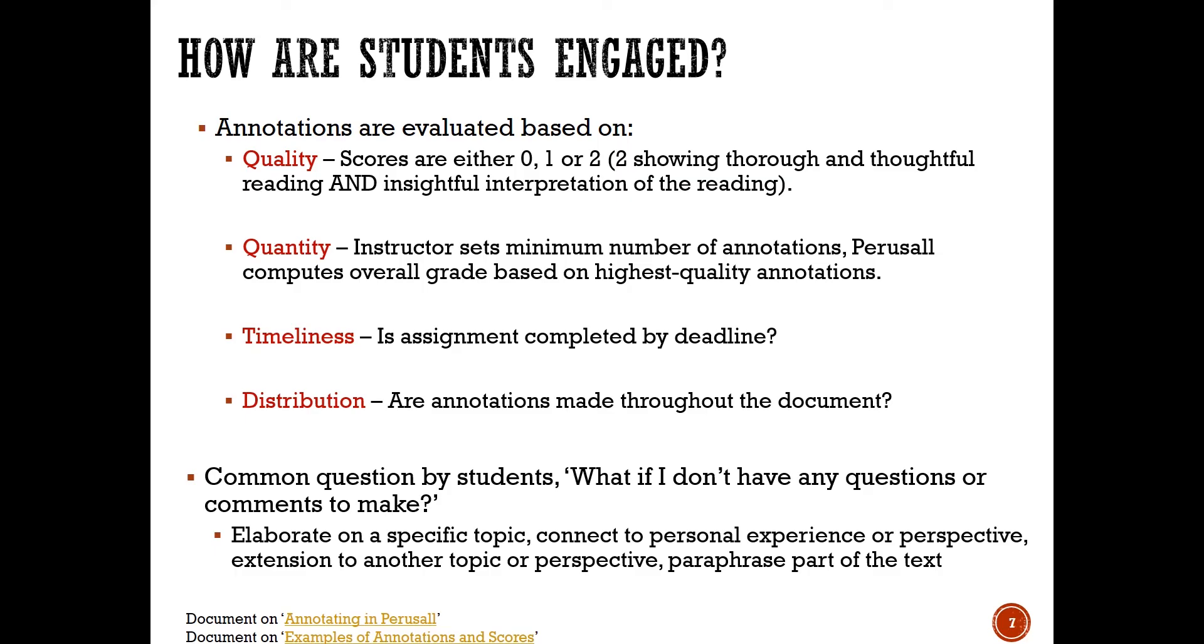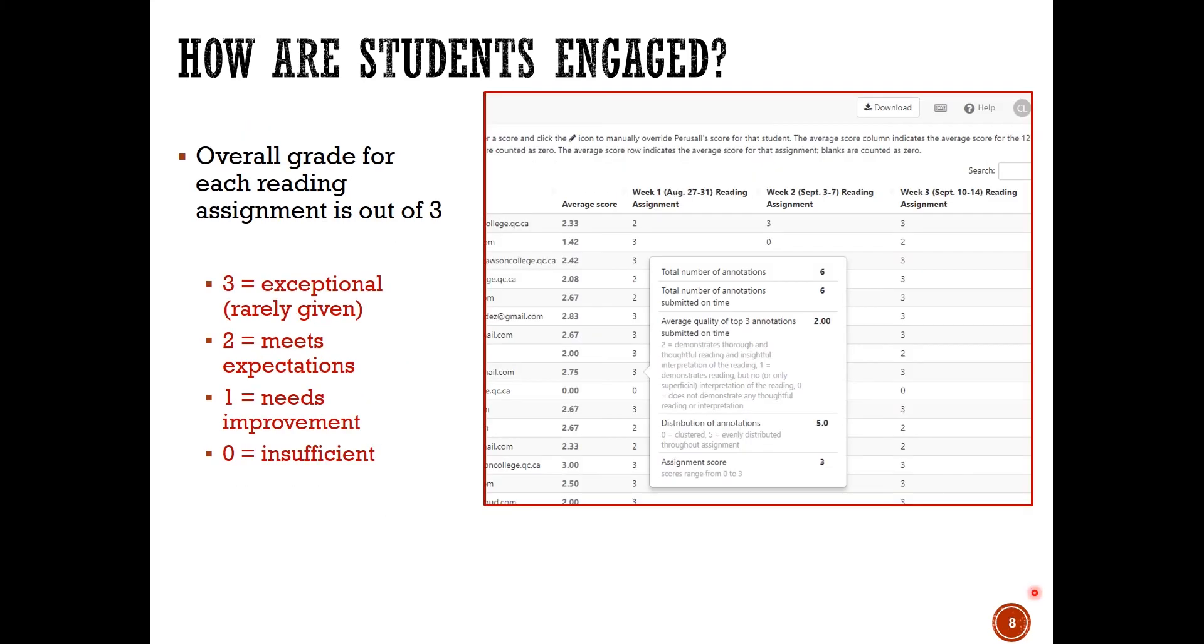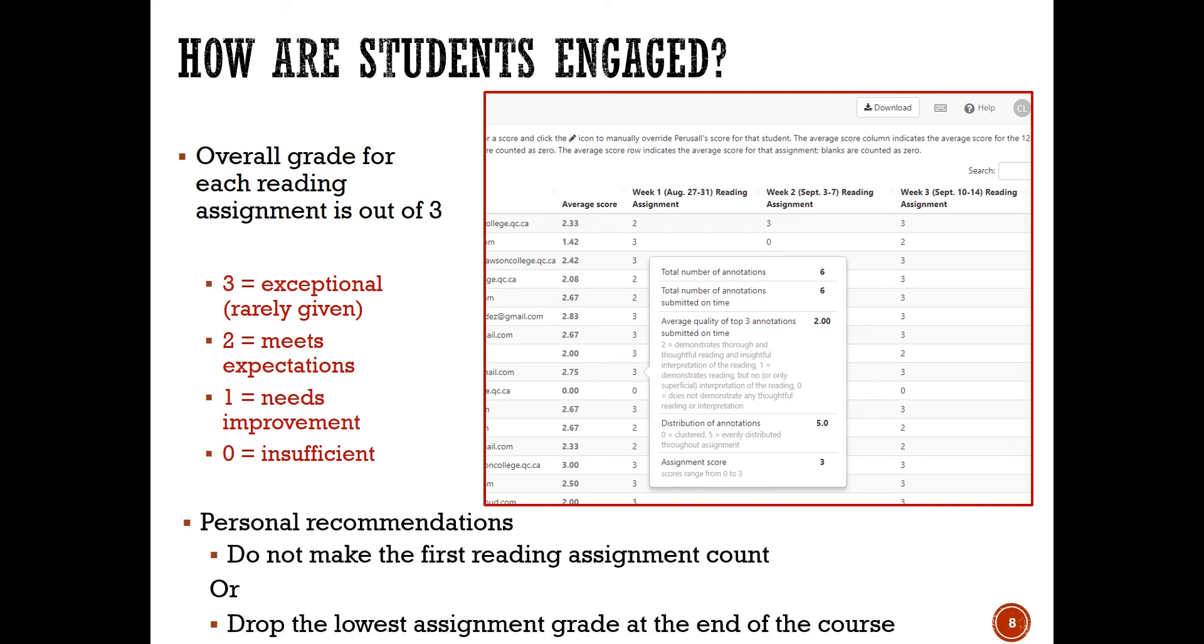The maximum grade that a student can achieve in a reading assignment is three. This is a snapshot of what your Moodle gradebook will look like—for each reading assignment there are grades for each student, and if you click on a particular grade you can see what it's based on. My recommendation when you first introduce Perusall to your students is to not make the first reading assignment count, so they can see what it takes to score well on their annotations.